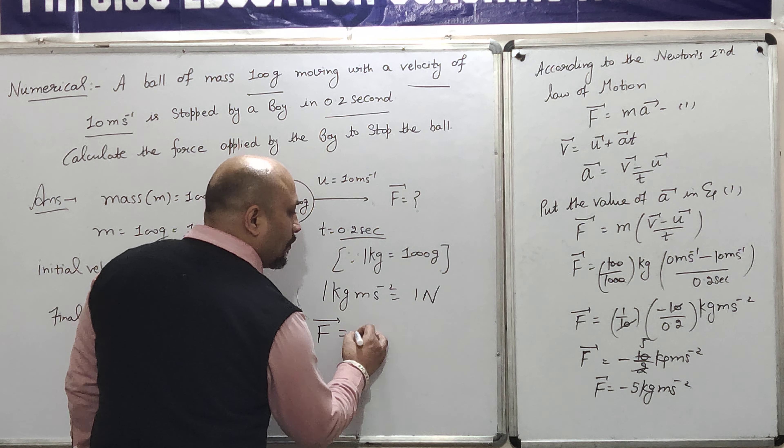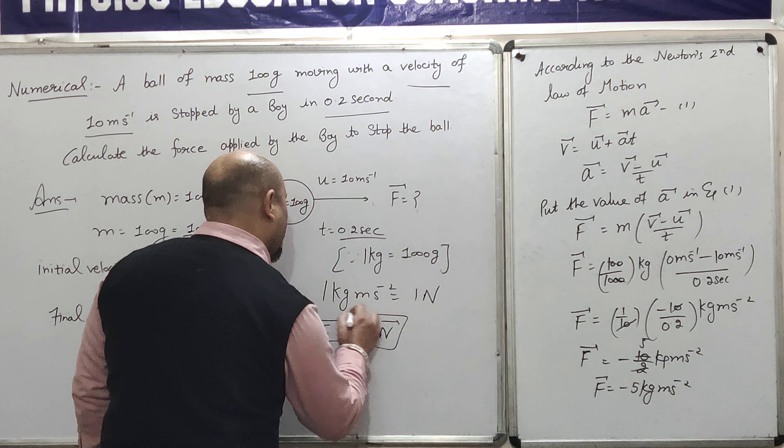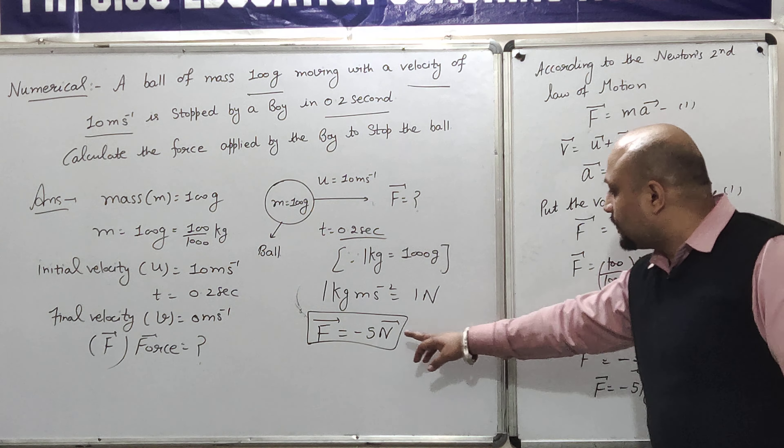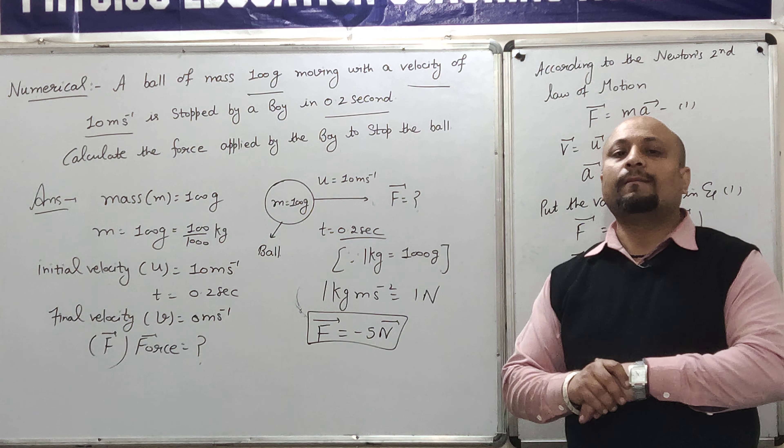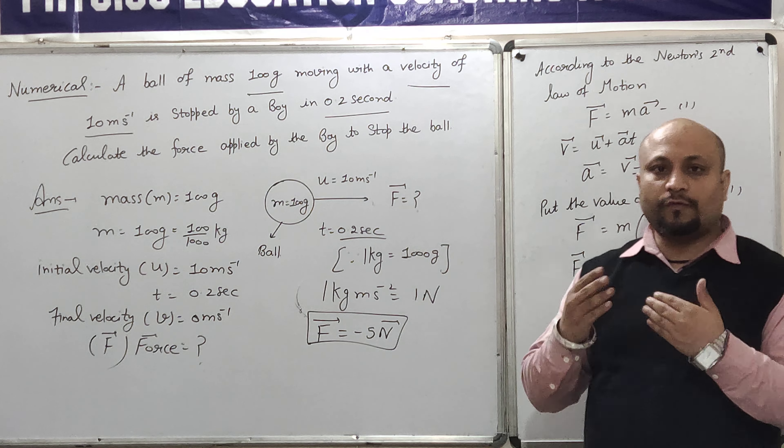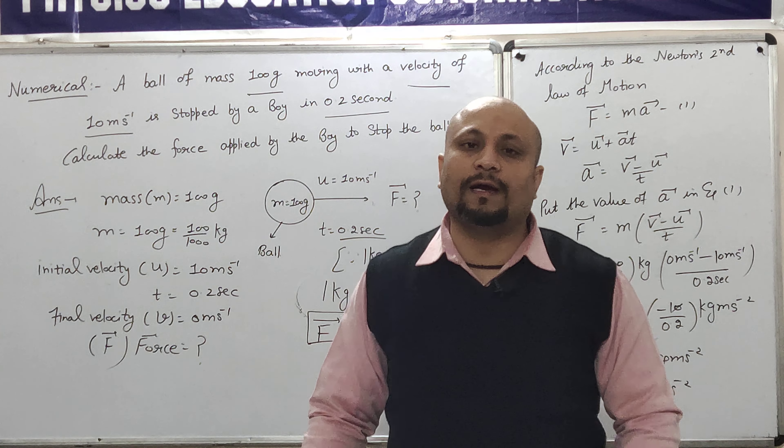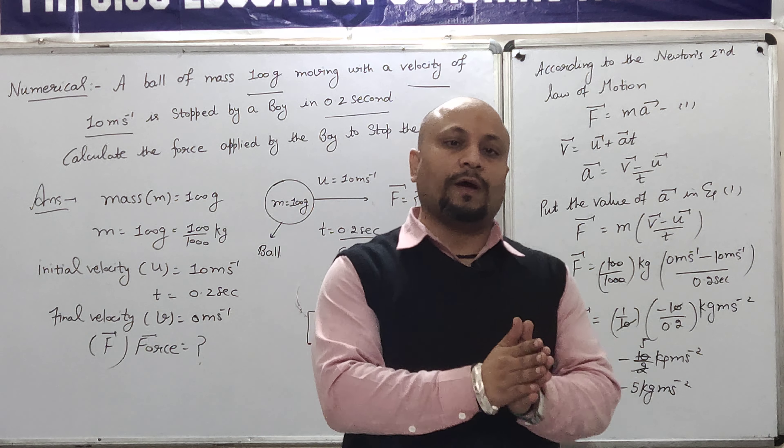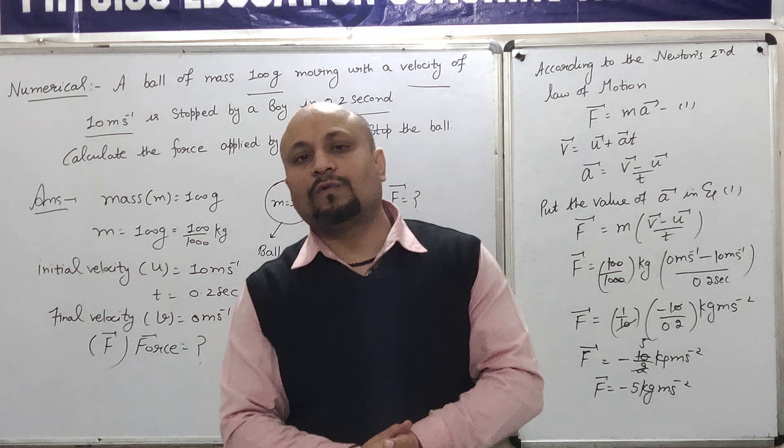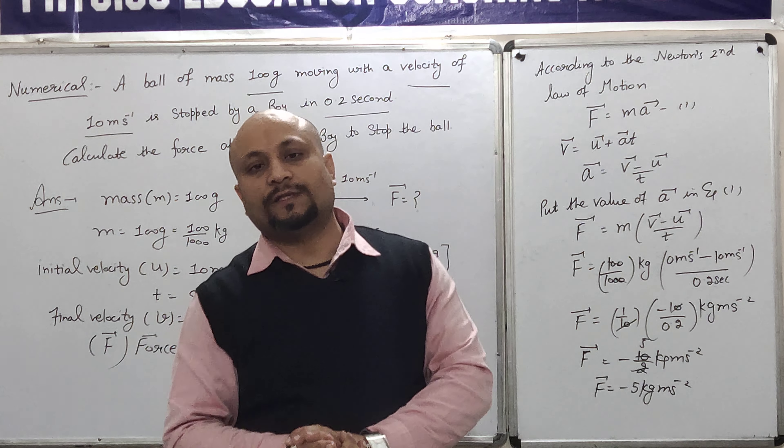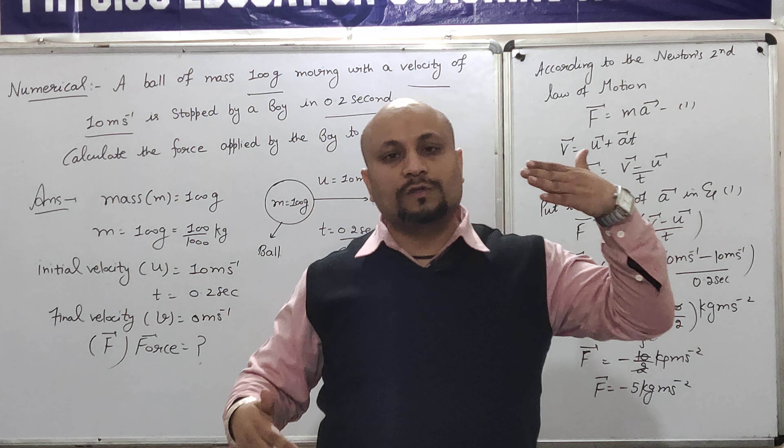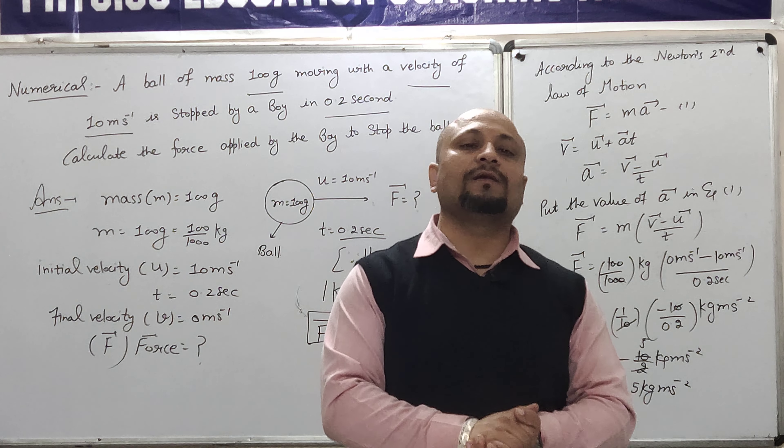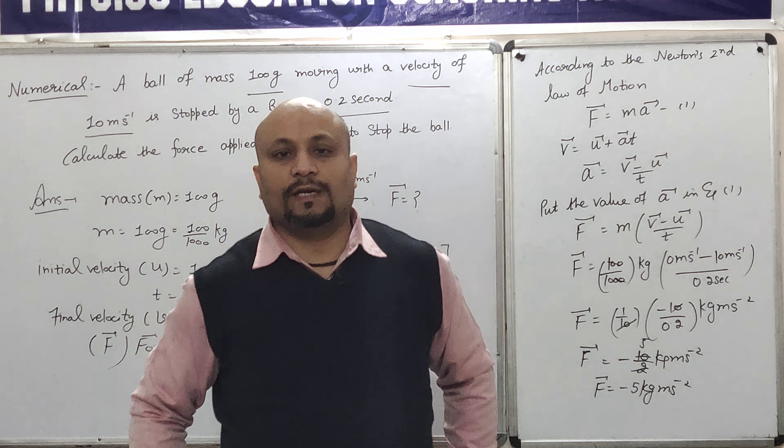तो what is the value of the force which is to be applied by the ball? Applied by the boy to stop the ball. That is 5 Newton. Now what is the minus sign indicate? Minus sign ये indicate कर रहा है कि जो force boy ने उस ball को stop करने के लिए लगाया वो force उस motion को oppose कर रहा था. The force that is exerted by the boy on the ball that force oppose the motion of the object. Means अगर ball ऐसे आ रही है तो force की direction ये थी तो कितना force उसने apply किया 5 Newton.